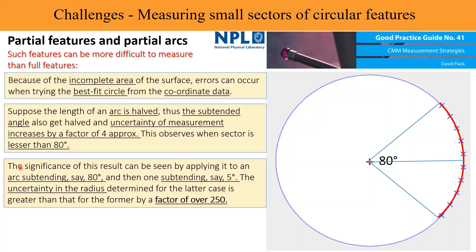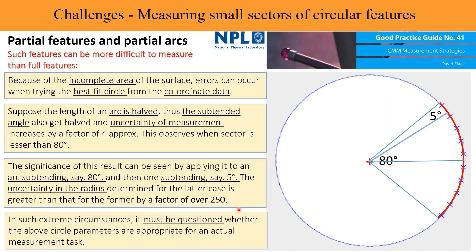The significance of this result can be seen by applying it to an arc subtending, for example, 80 degrees and then one subtending just 5 degrees. The uncertainty in the radius determined for the latter case is greater than that for the former by a factor of over 250. In such extreme circumstances, it must be questioned whether circle parameters are appropriate for the actual measuring task.